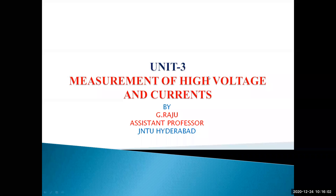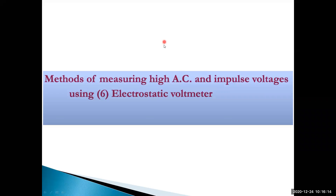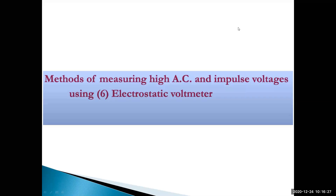Measurement of impulse voltage by using electrostatic voltmeter - these are important concepts to measure high voltages. You already studied measurement of AC by using electrostatic voltmeter. In basic measurement, there are three measuring instruments: moving iron, PMC, and electrostatic voltmeter. In high voltage engineering point of view, by using electrostatic voltmeter we have to measure very high impulse voltages.